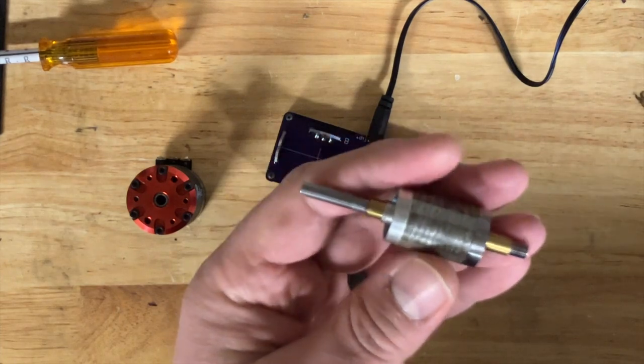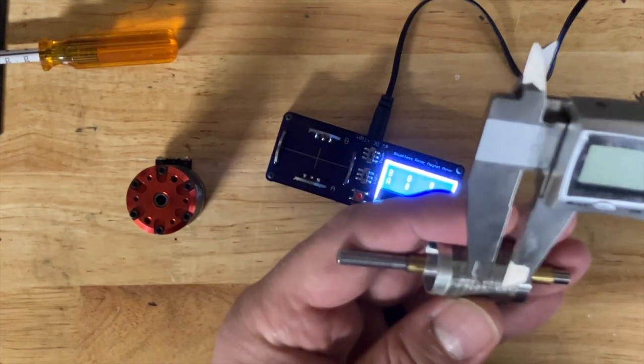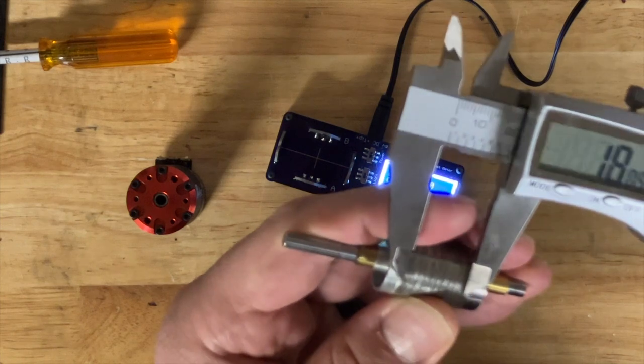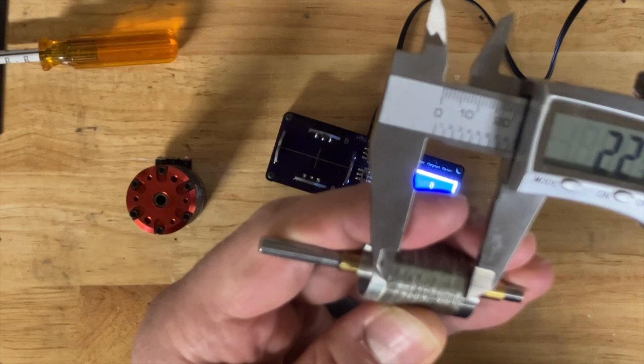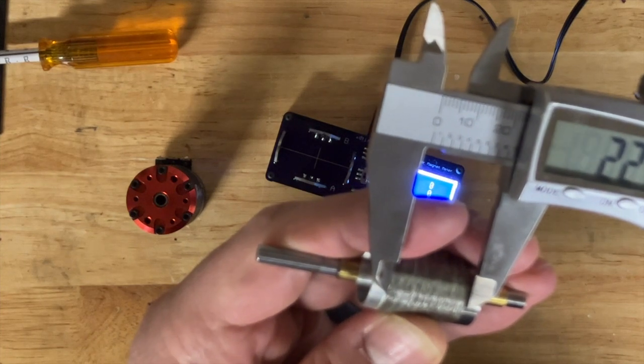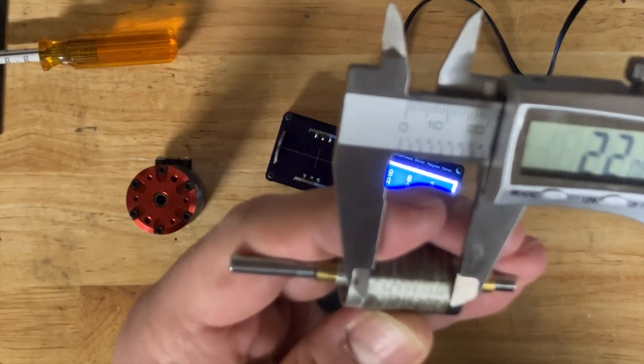For example, the Hobbywing Quick Run 3660 has a longer magnet, but this one is shorter with a greater diameter.